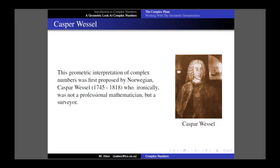This geometric interpretation was first proposed by a Norwegian by the name of Caspar Vessel, who lived from 1745 to 1818, who ironically was not a professional mathematician but a surveyor. With hindsight, this is perhaps not so surprising — Vessel was looking to complex numbers as a practical means of solving real-world problems he was encountering. Indeed, by the end of the 19th century, complex numbers had become a common tool for physicists and engineers, especially in the field of electricity. The techniques they were finding so useful fall straight out of this geometric interpretation.